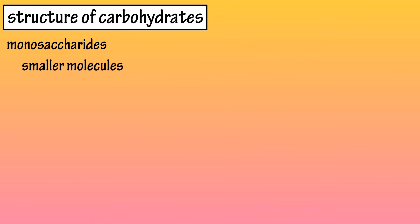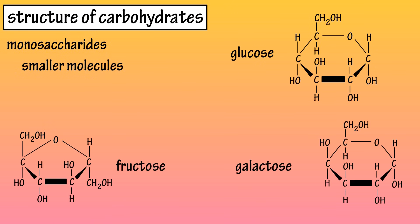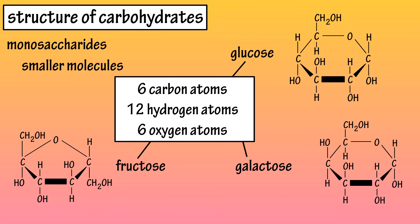Two other important 6 carbon monosaccharides are fructose and galactose. Like glucose, both of these molecules have 6 carbon atoms, 12 hydrogen atoms, and 6 oxygen atoms, but their structures are all slightly different. Not all monosaccharides are 6 carbon molecules, as ribose and deoxyribose have only 5 carbon atoms in their structure, and we will cover them in depth in a nucleic acids video.